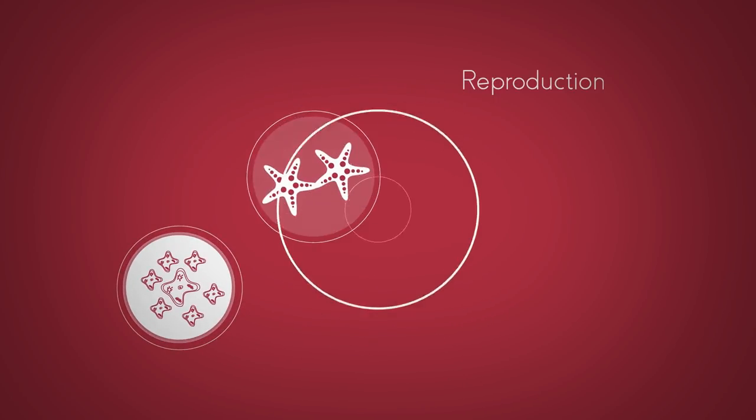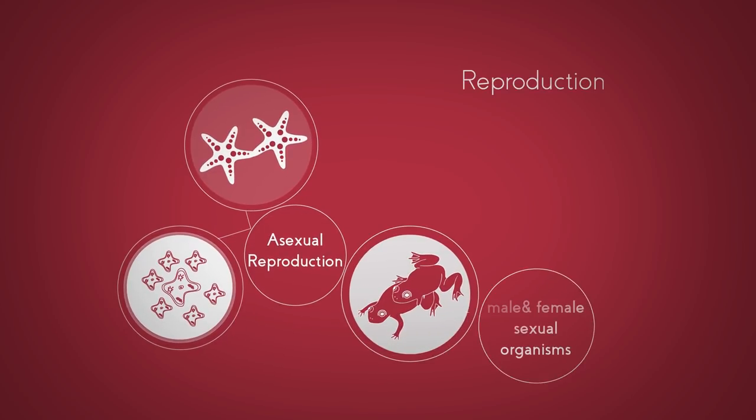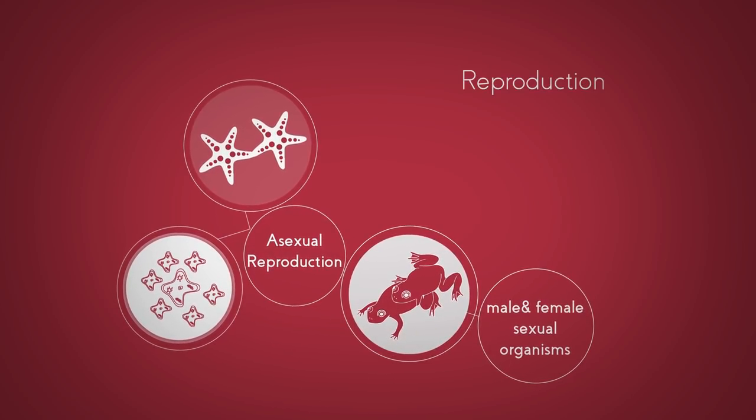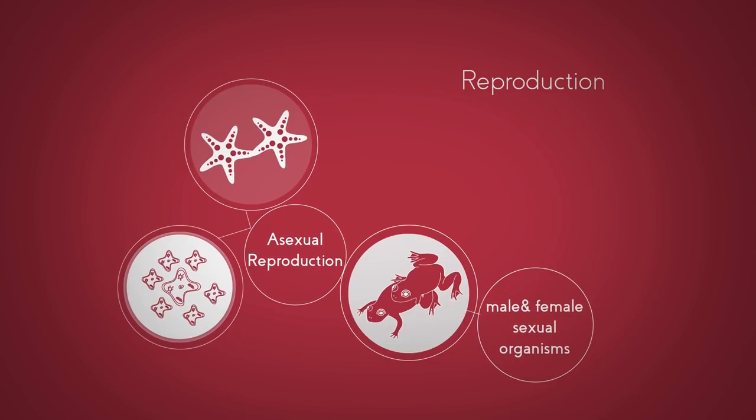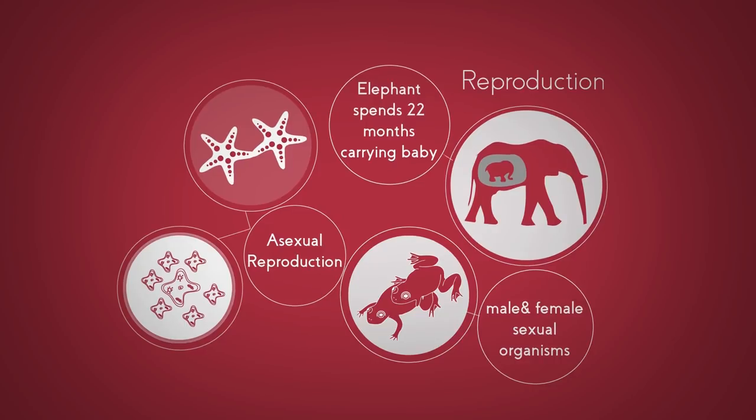The fifth is reproduction. Some organisms can reproduce on their own, such as bacteria. This is called asexual reproduction. Others carry out sexual reproduction, using a male and a female of the species. Bacteria can reproduce every 20 minutes, but an African elephant takes 22 months to carry its baby.